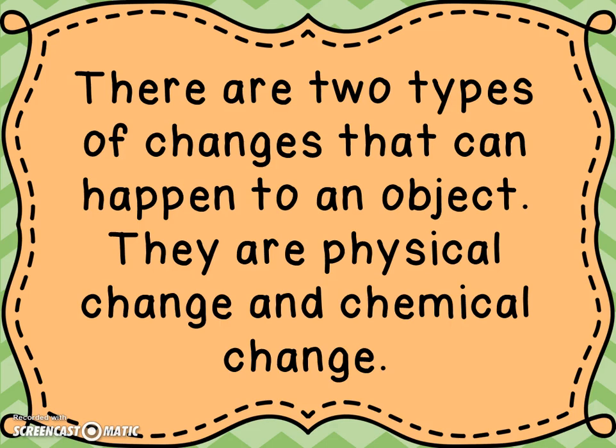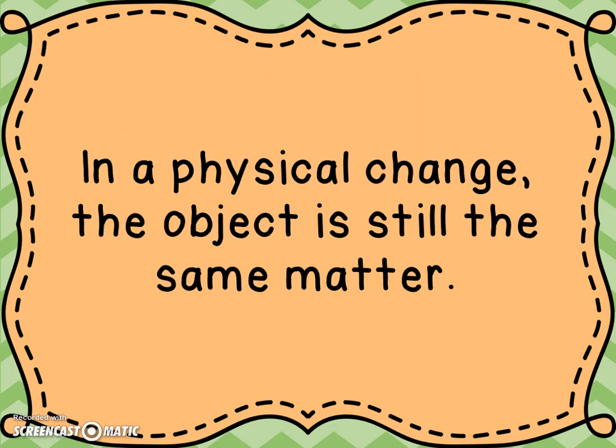There are two types of change that can happen to an object. They are physical change and chemical change.